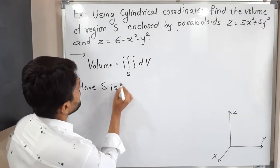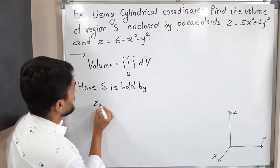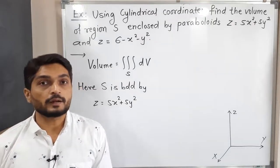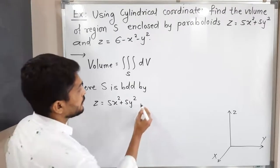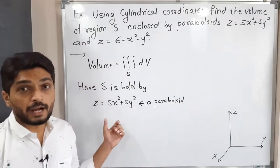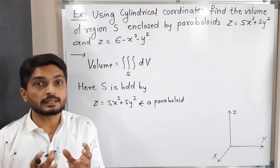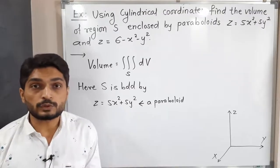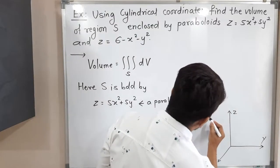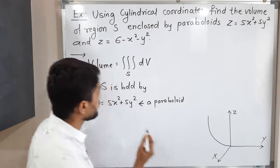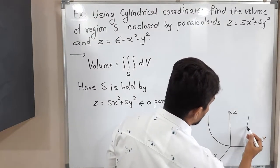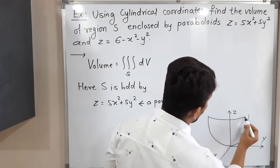The region S is bounded by z = 5x² + 5y². The power of z is one and the power of x and y is two, so this is a paraboloid. This paraboloid is around the z-axis. Since z has a positive sign, the paraboloid will be in the upward direction. It passes through the origin, since when z = 0, we get x = 0 and y = 0.